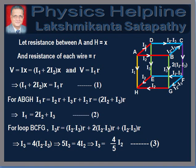Now, consider the loop ABGH. Current in wire AH is anticlockwise and currents in the wires AB, BG and GH are clockwise. Therefore, voltage across AH is equal to sum of the voltages across AB, BG and GH. Therefore, we write I1R is equal to I2R plus I3R plus I2R. This gives I1 is equal to 2I2 plus I3. We mark this as equation 2.